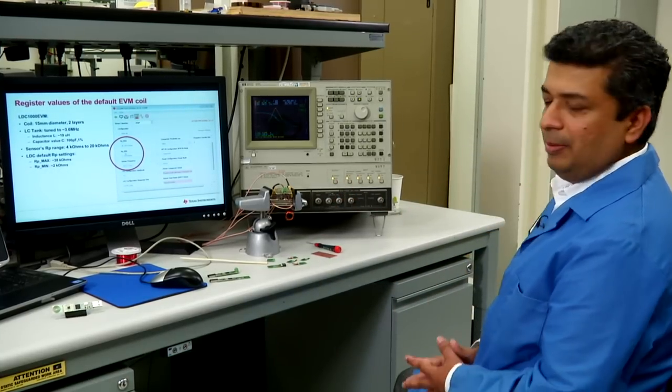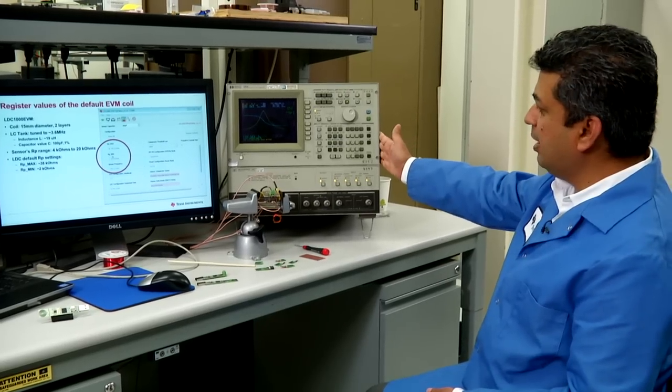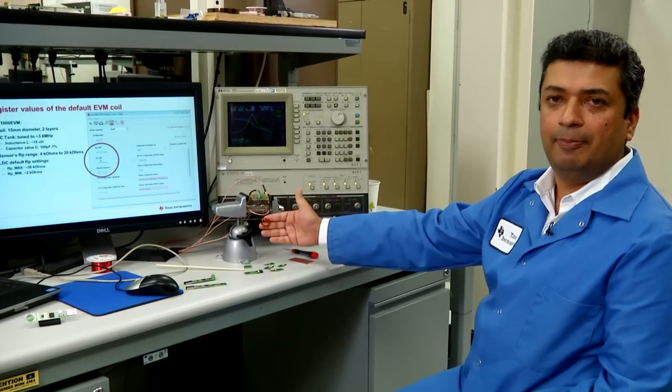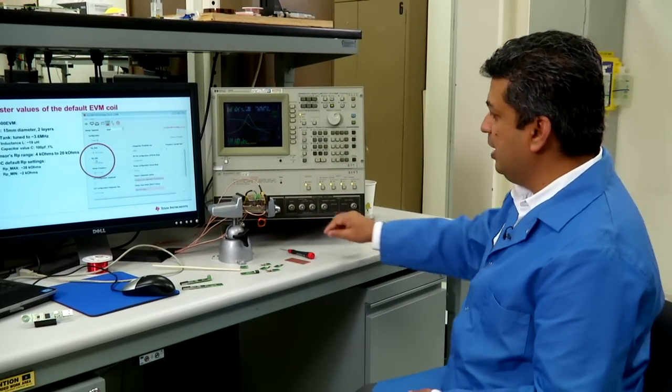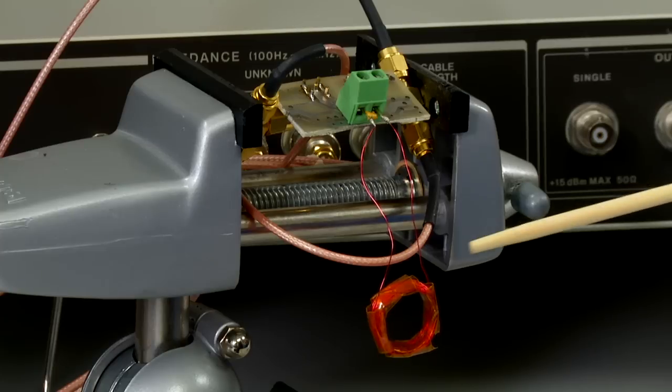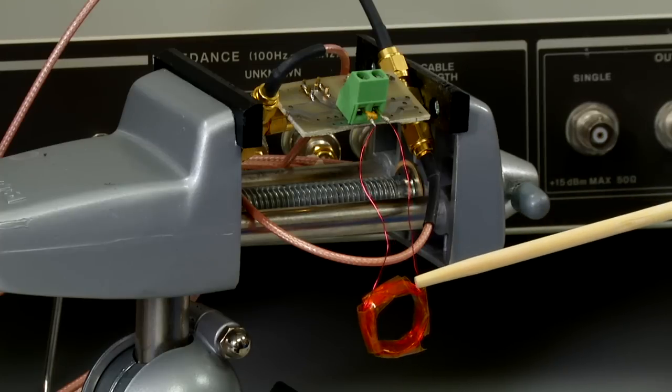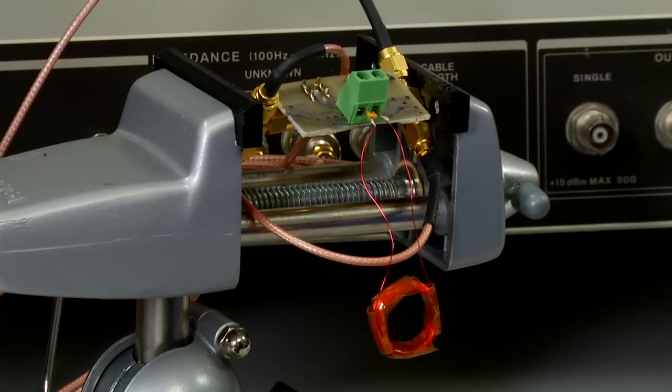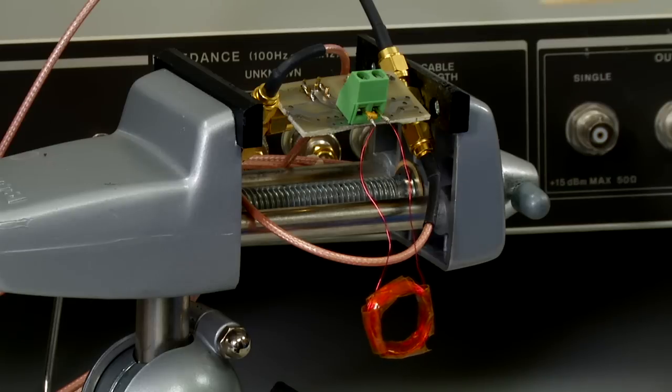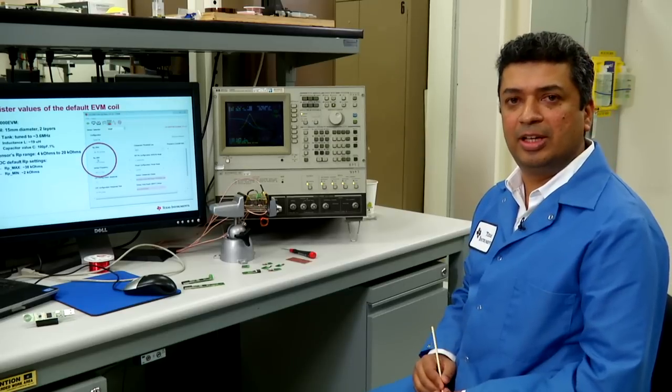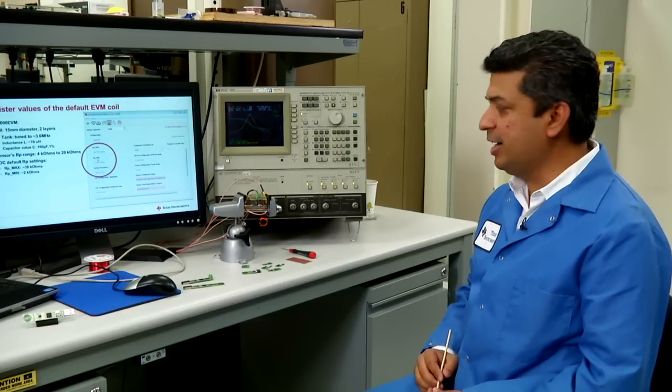Here in this setup, I have an impedance analyzer connected to this coil. What I have in this setup is this inductor plus I have a capacitor connected in parallel exactly as it is shown in the LDC1000 EVM schematic.